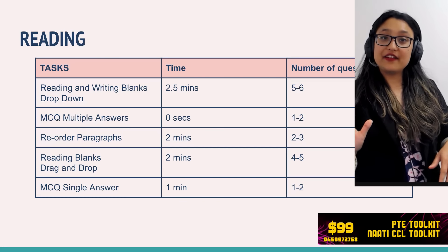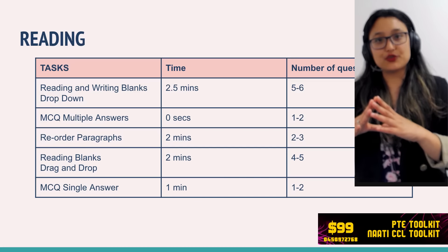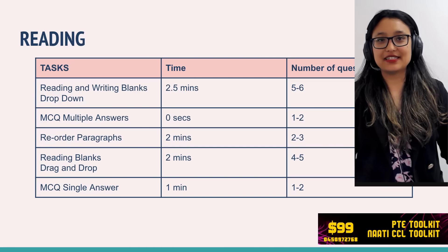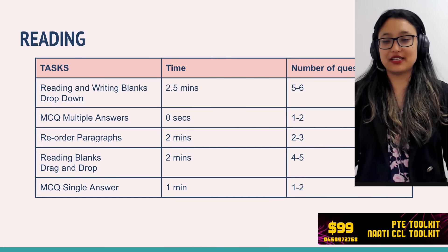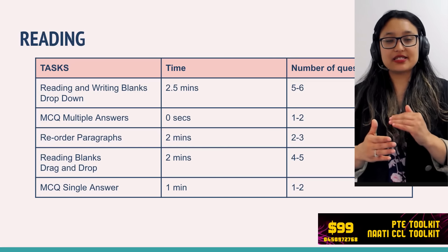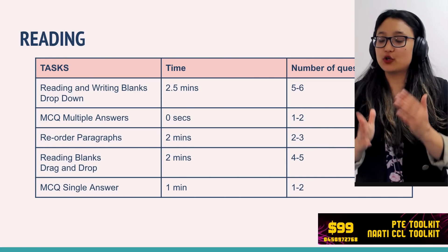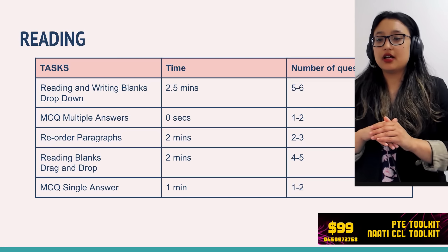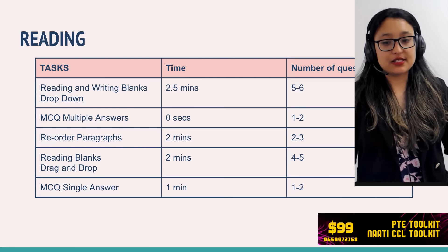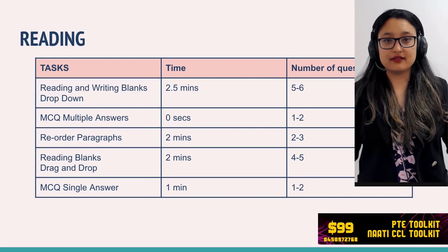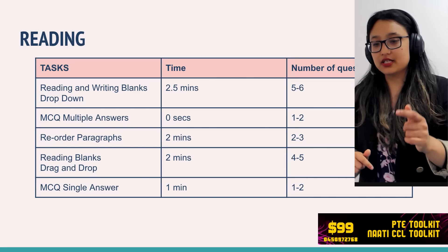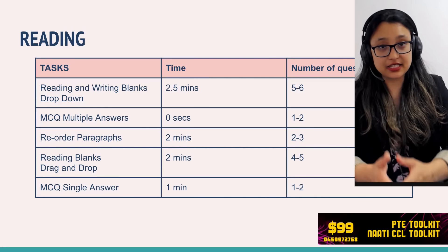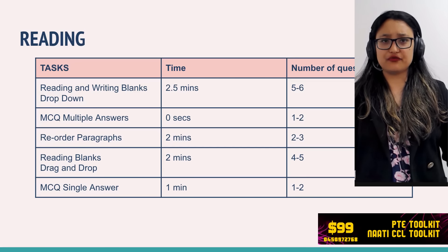All together there will be 20 question types. These four modules are divided into three parts: the first part is speaking and writing, the second part is reading, and the third is listening. Part one — speaking and writing — will take 54 to 67 minutes and has seven tasks: five from speaking and two from writing. Reading is 28 to 30 minutes with five tasks, and listening is 30 to 43 minutes with eight tasks.